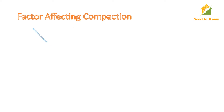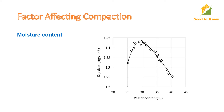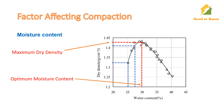Moisture content also affects compaction. This is the Proctor curve of soil. At low water content, the soil is stiff and offers more resistance to compaction. As water content increases, the soil particles get lubricated, resulting in good compaction and higher dry density is achieved at the optimum water content. Increasing water content beyond the optimum level causes the soil to lose rigidity, and thus compaction decreases.